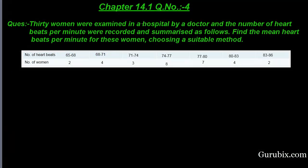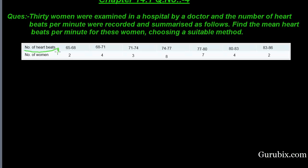Welcome friends. This is question number 4 of chapter 14.1. The question says that 30 women were examined in a hospital by a doctor and the number of heartbeats per minute were recorded and summarized as follows. Find the mean heartbeat per minute for these women choosing a suitable method. In this table, the first row is number of heartbeats per minute and the second row is number of women.